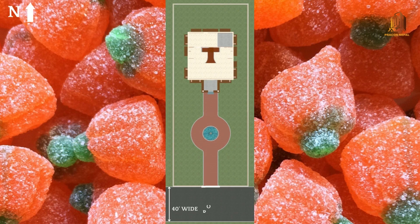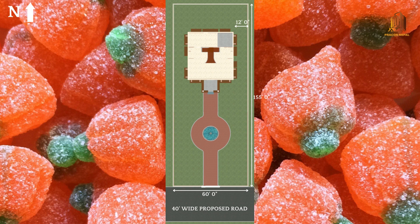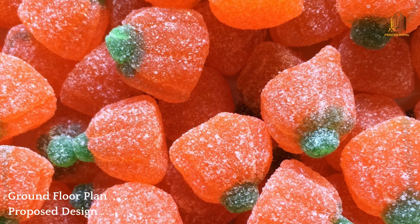જગાક દક્શીન તર્પ ચાળીસ ફીટ ચોડાઈ રહેગો, પ્લોટ કાયમ. ગ્રાઉન્ડ ફ્લોર 60 ફીટ રહેગો. બને જગાકો લંબાઈ 15 ફૂટ રહેગો. ગ્રાઉન્ડ ફ્લોર નિમીત્ત પૂર્વ તર્ફ 12 ફૂટ છોડીએગો.